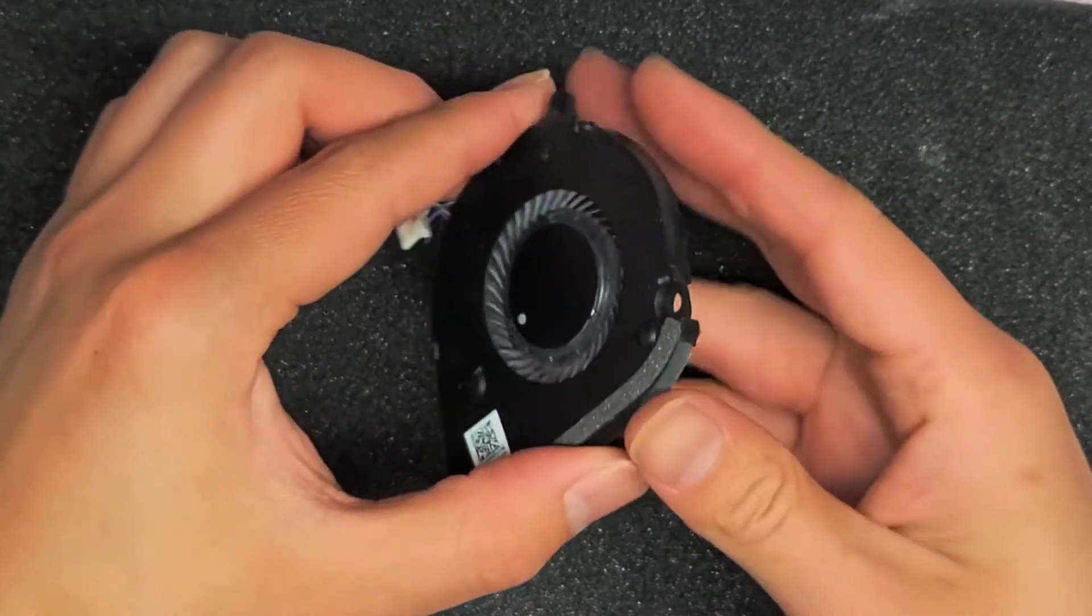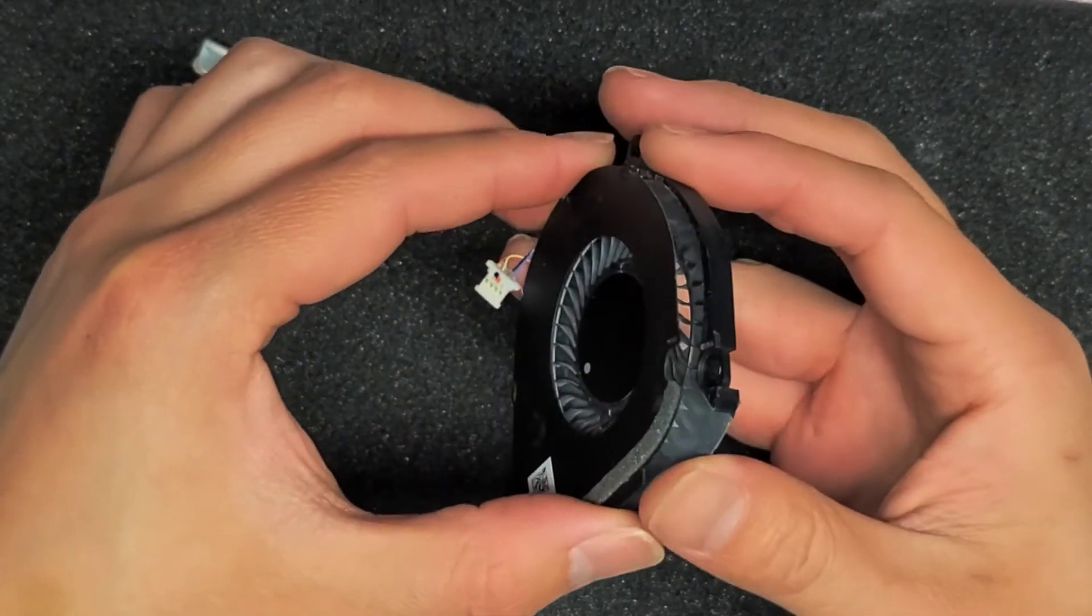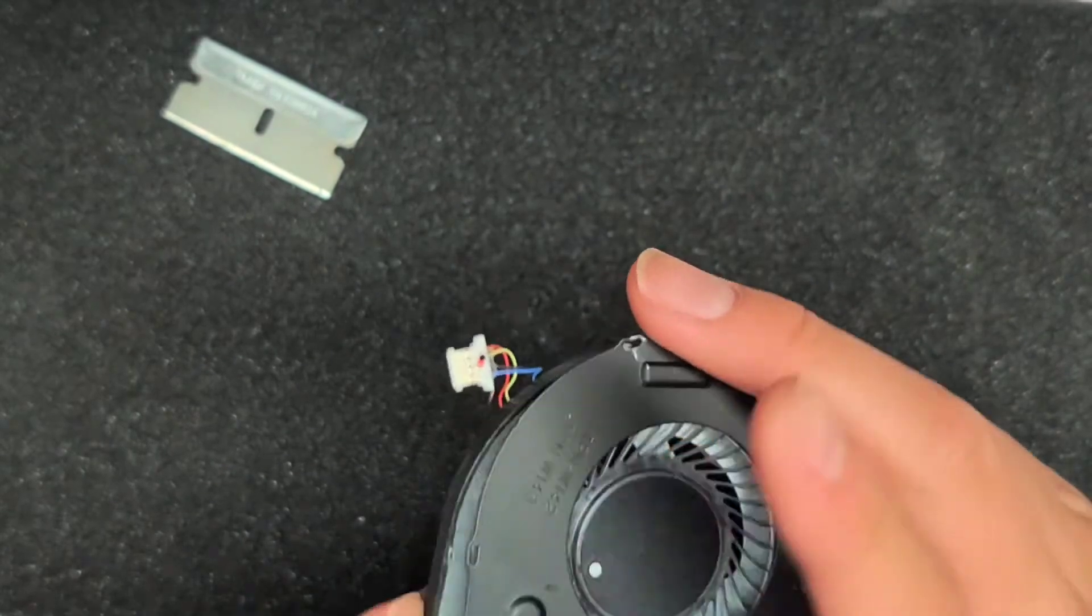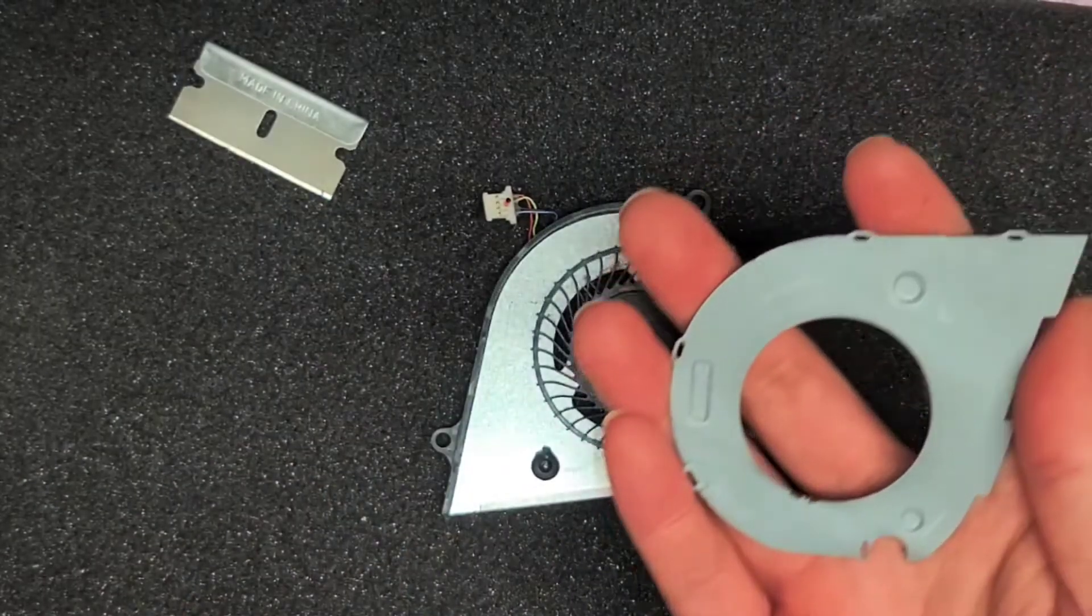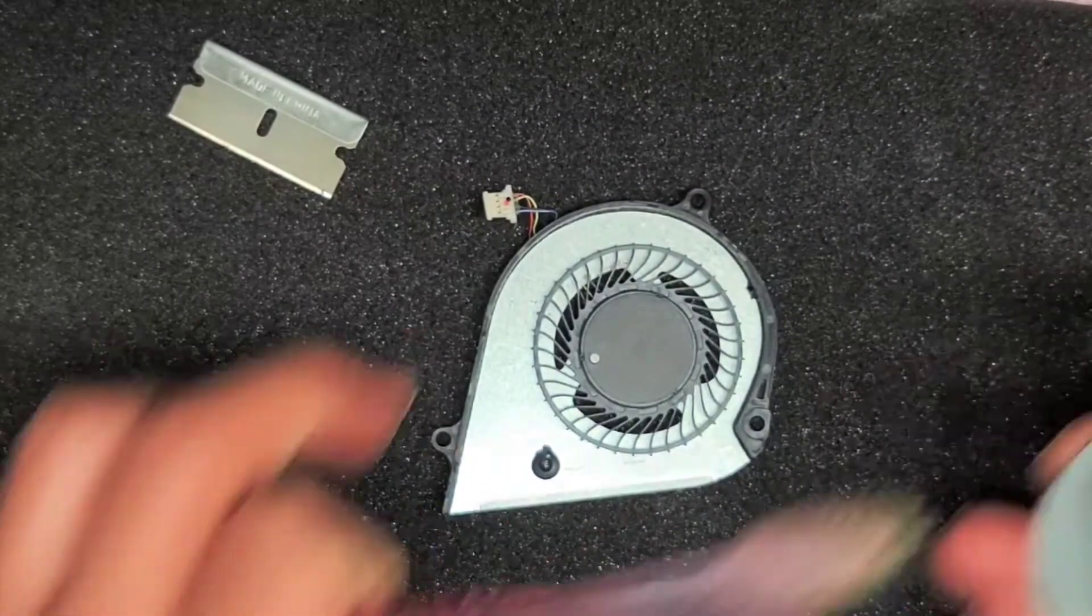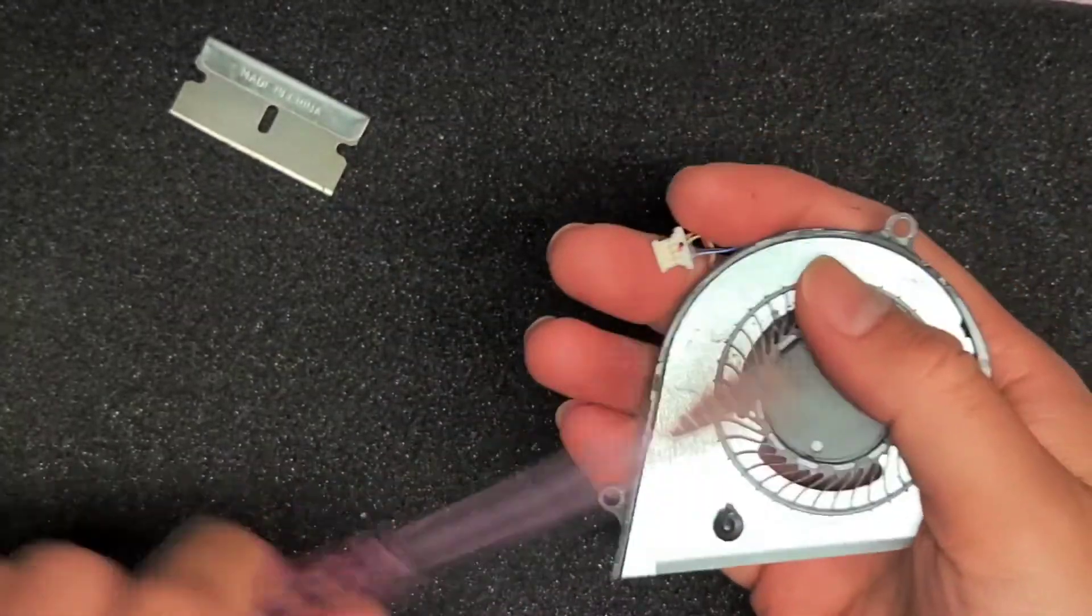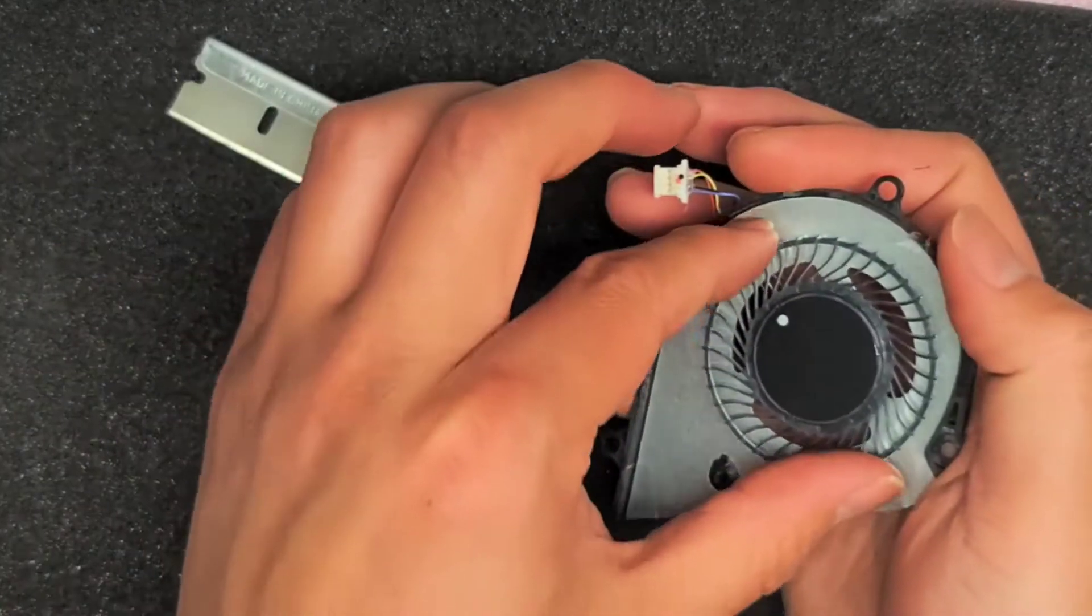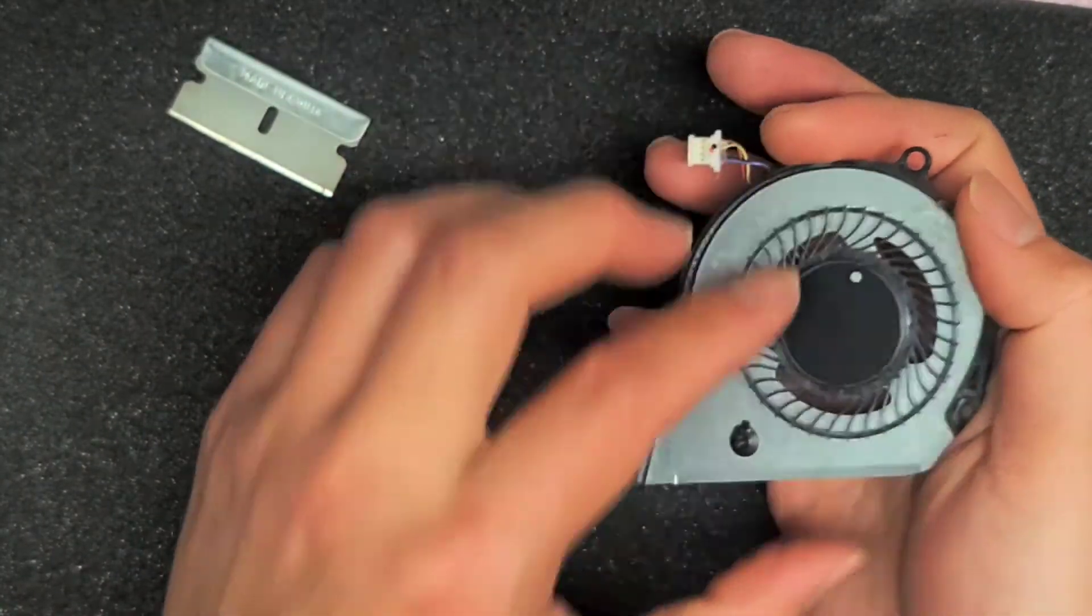Now we should be able to lift this metal plate off. You can see it separates, and do this slowly just in case it's getting caught somewhere. There we go. So we got that out. I'm going to brush the dust off here, and if we're lucky, these propeller blades will come out easily. Let's see here, and we are not lucky.